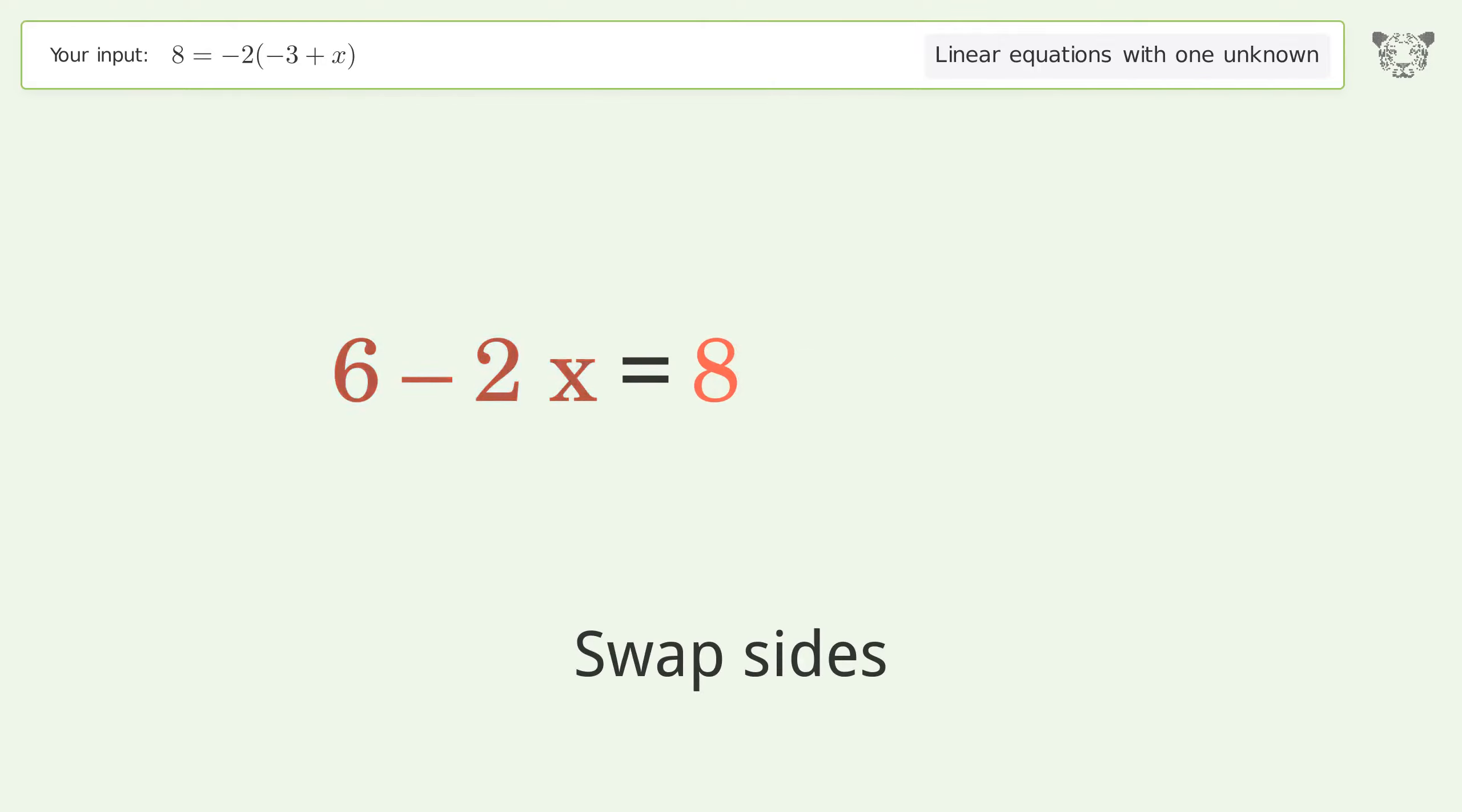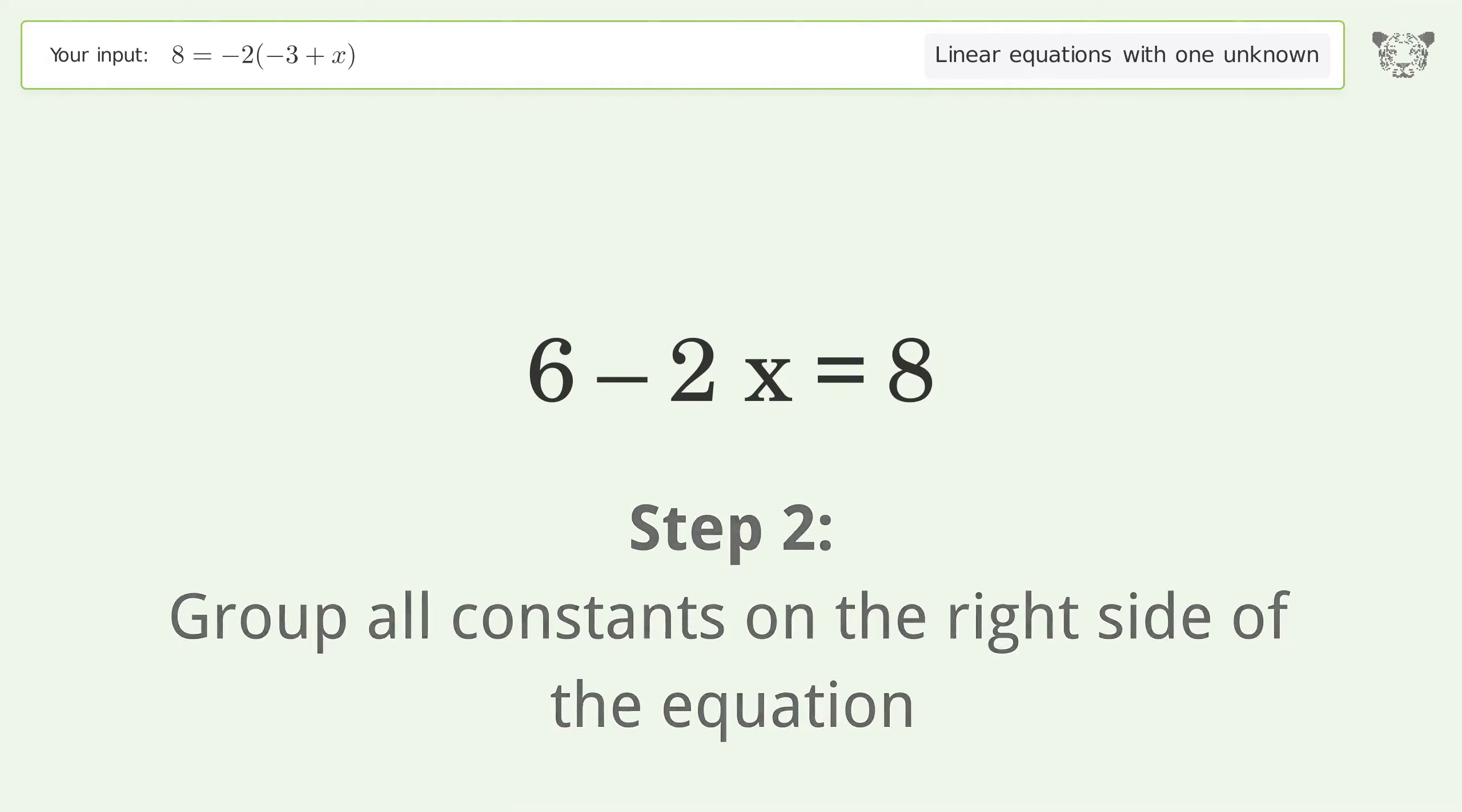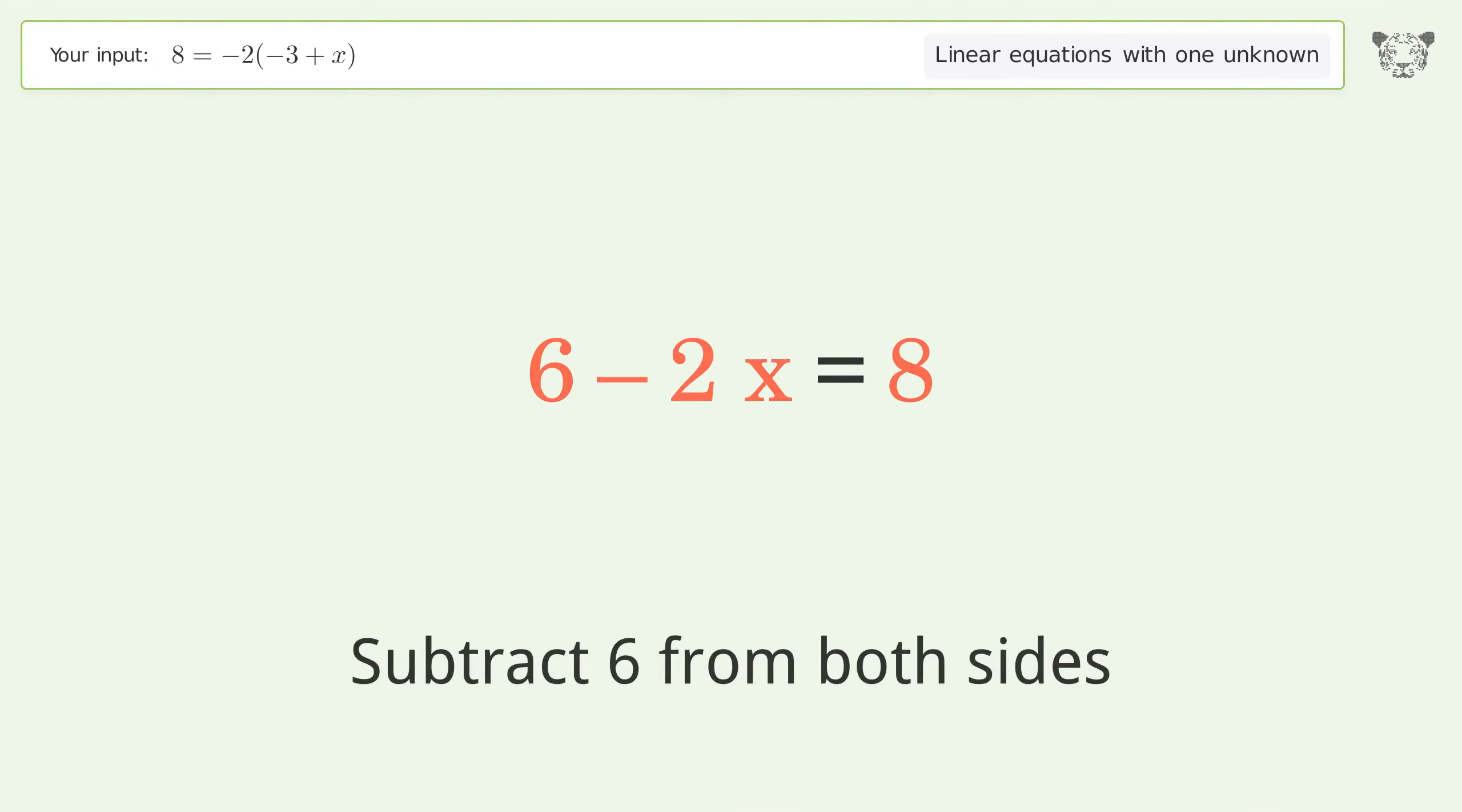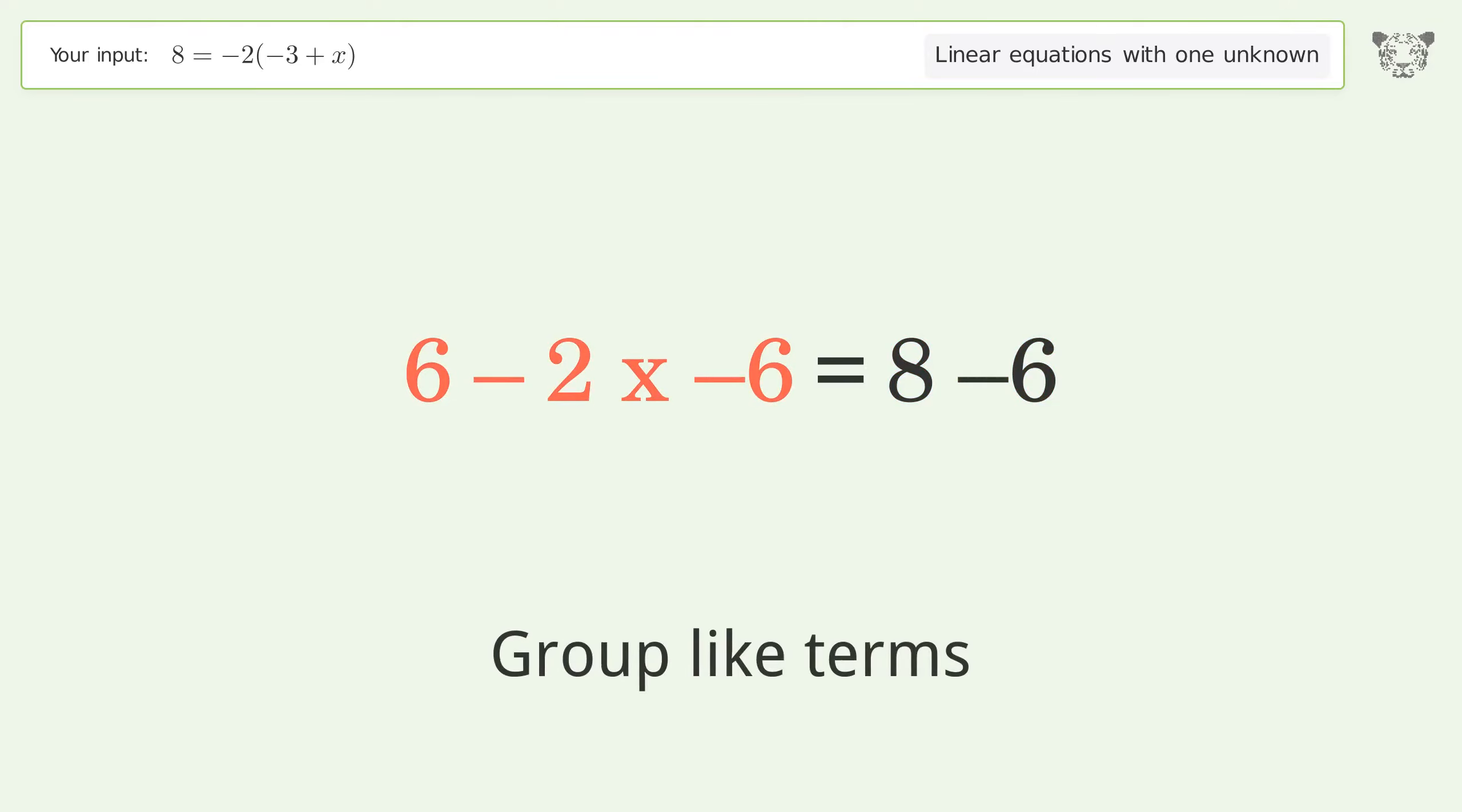Swap sides. Group all constants on the right side of the equation. Subtract 6 from both sides.